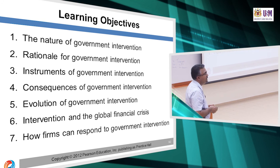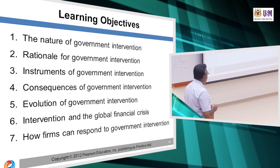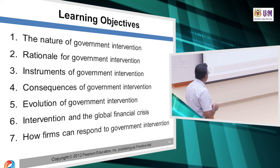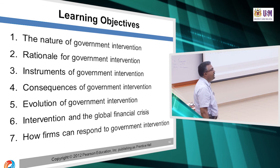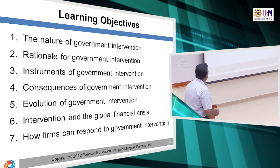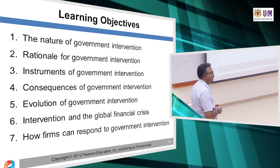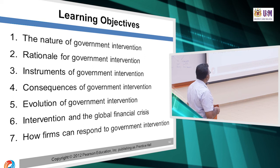Here are some of the objectives of today's learning: the nature of government intervention, the rationale — why the government intervenes, the instruments government uses to intervene, the consequences of the intervention, how it evolved over the last few decades until today, how the intervention changed during the global financial crisis, and how firms can respond to government intervention.